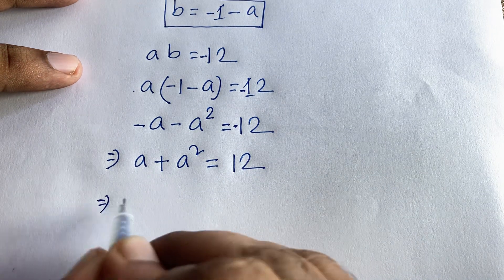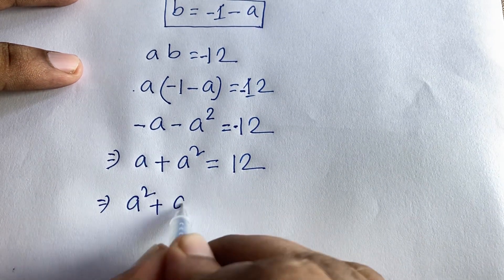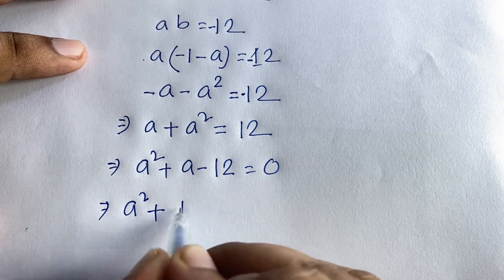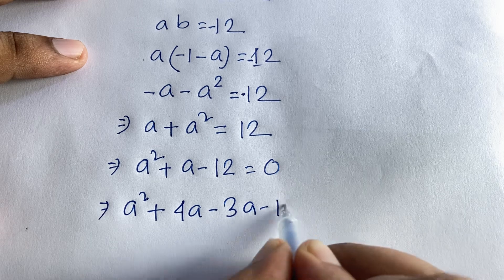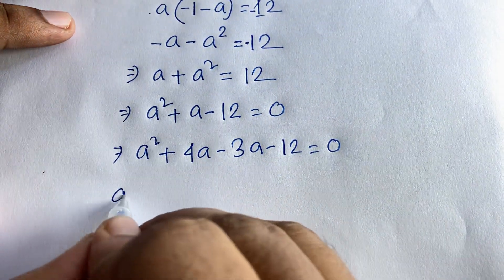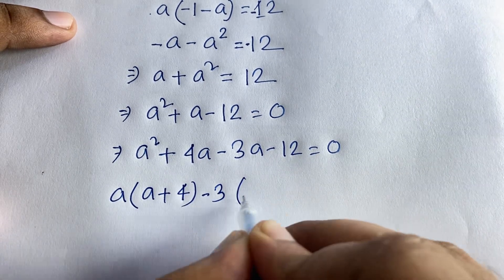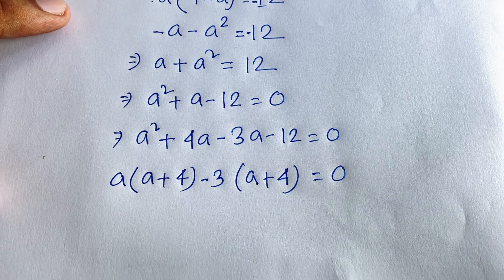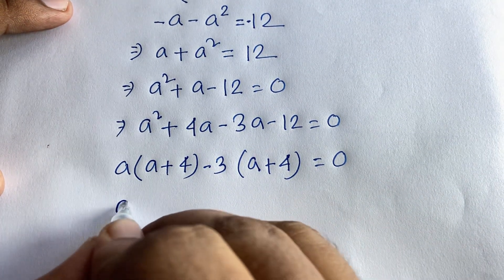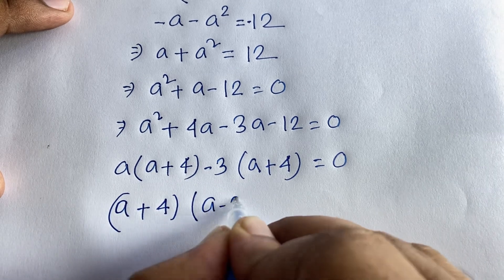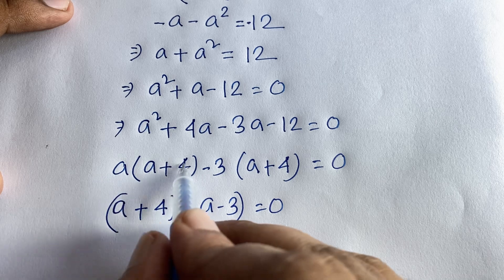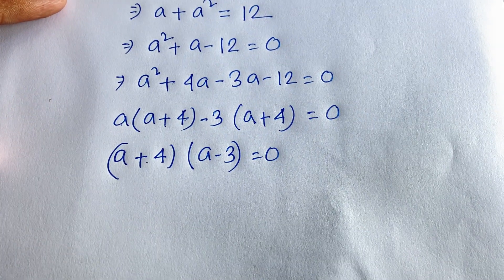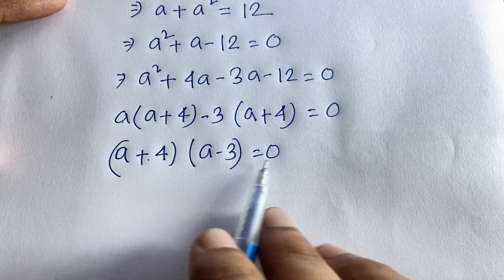Multiplying both sides by negative 1: a squared plus a equals 12, so a squared plus a minus 12 equals 0. Using middle term factoring: a squared plus 4a minus 3a minus 12 equals 0. Factoring: a(a plus 4) minus 3(a plus 4) equals 0, giving (a plus 4)(a minus 3) equals 0.